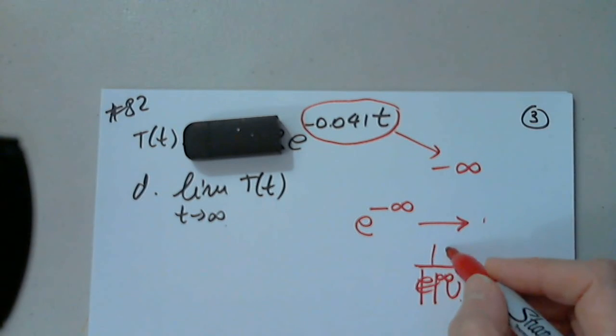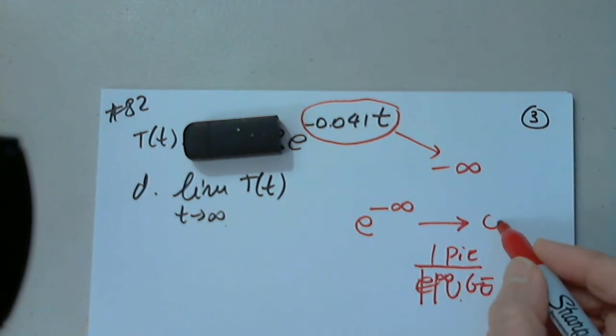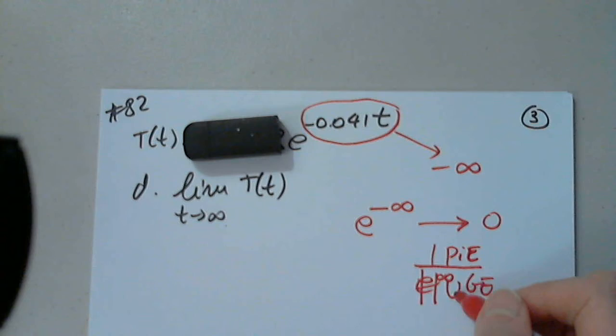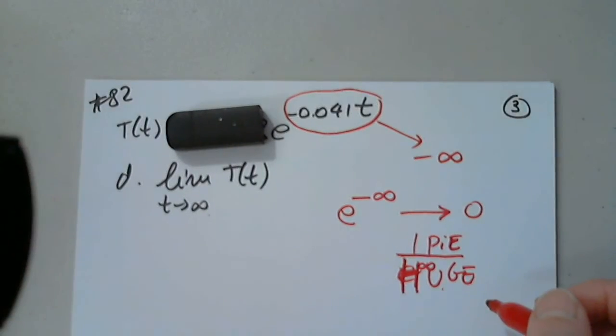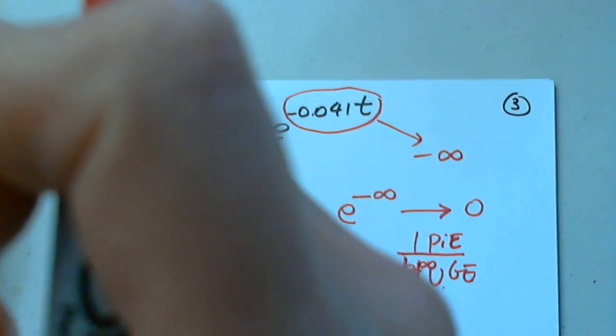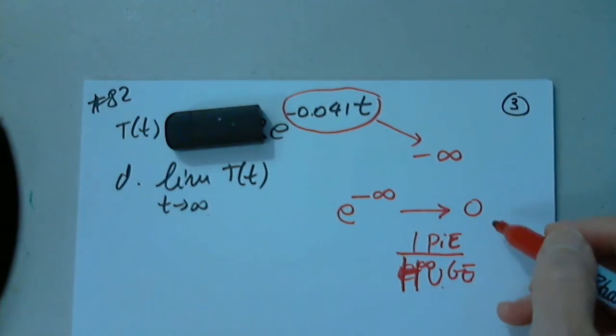1 over huge. I have 1 pie and I want to give a piece to everybody on the planet. When I get to your door, assuming I start in China, how much will you get?